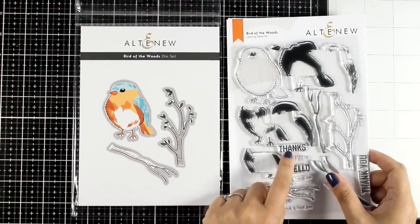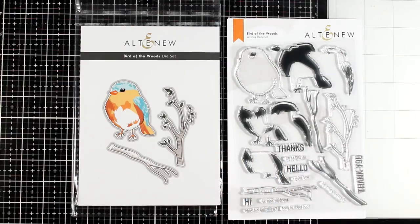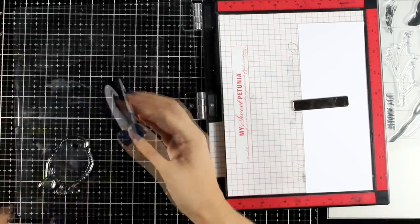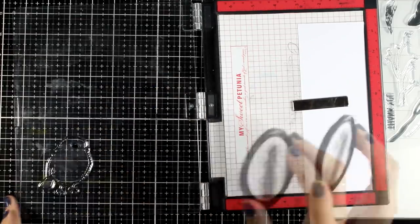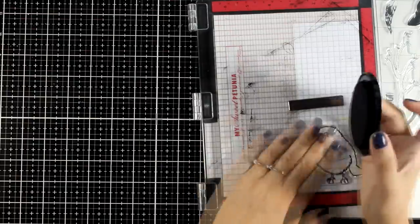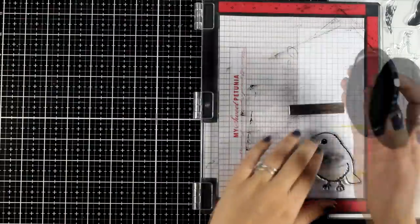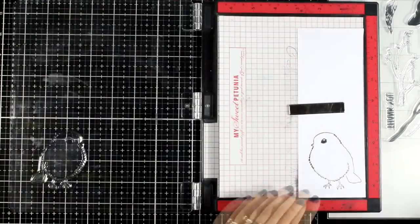You get the bird, the layers, as well as a couple of branches and lots of sentiments to play with. And I absolutely love the size of it. Just because it is quite big it makes a good focal point. It really makes a statement on the front of a card, but just because it is so big I can use it on my art journal projects.